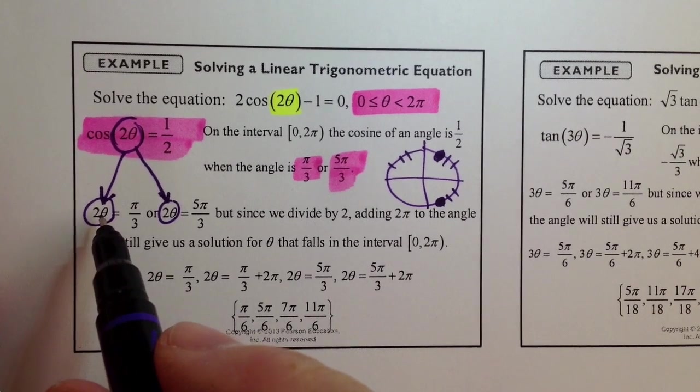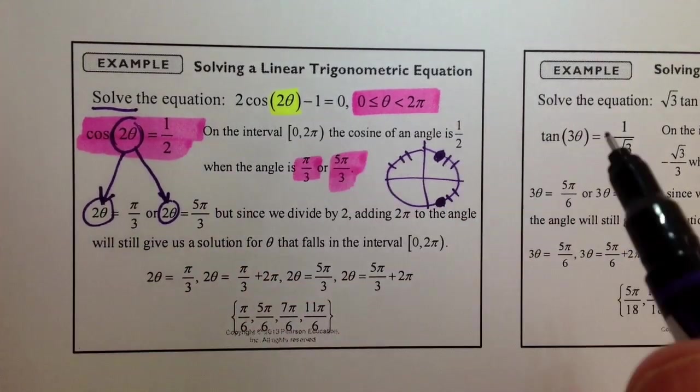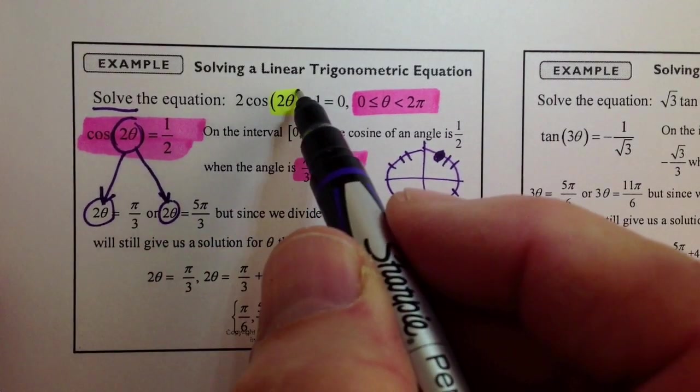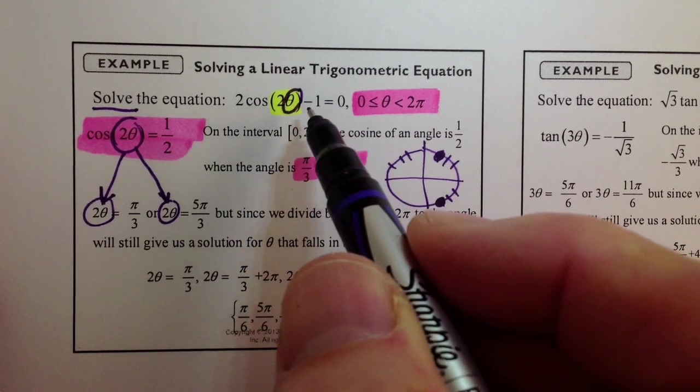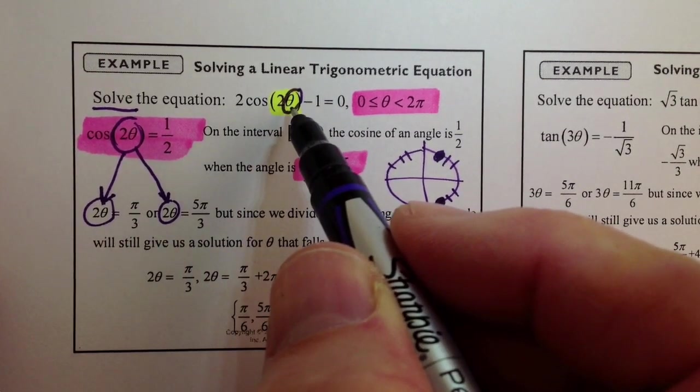And this is where we have to solve for theta because solving an equation, if you just take a step back here, look at this, solve the equation. This implies we're solving the equation for theta. We're not solving the equation for 2 theta. We're solving the equation for theta.